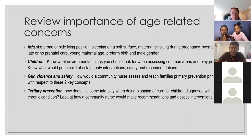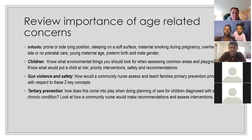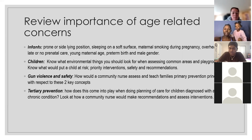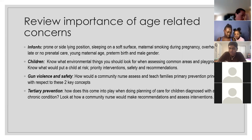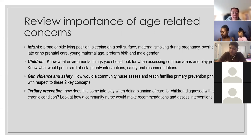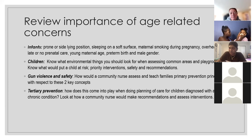Gun violence and safety — primary prevention principles include education on how to store firearms, putting ammunition separate from the gun, making sure it's locked up. These are all things we're going to be teaching our families about gun safety.